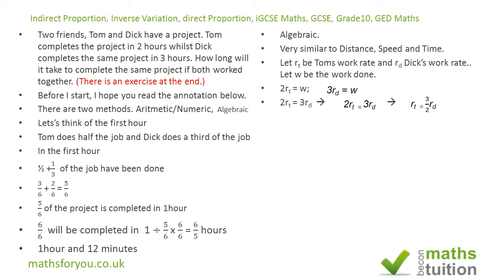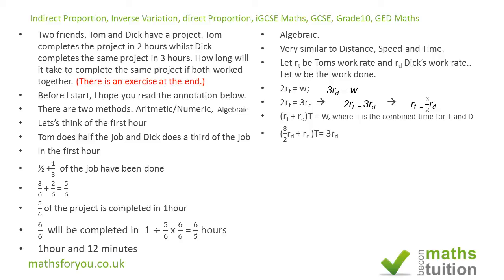When they work together, r-sub-t times t plus r-sub-d times t gives the total work done — where t is the combined time. Factorizing gives (r-sub-t plus r-sub-d) times t. Substituting r-sub-t as three-over-two r-sub-d, we get three-over-two r-sub-d plus r-sub-d, which equals five-over-two r-sub-d. Meanwhile, three r-sub-d equals the total work done W.